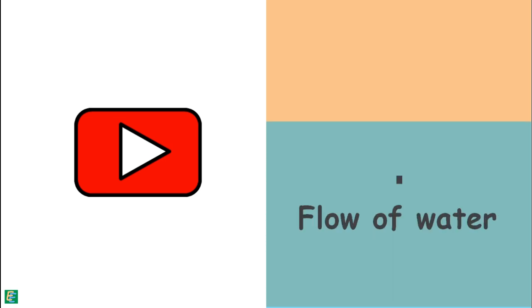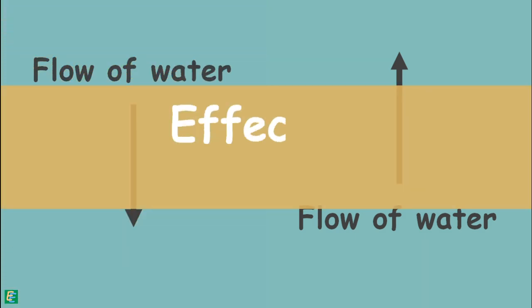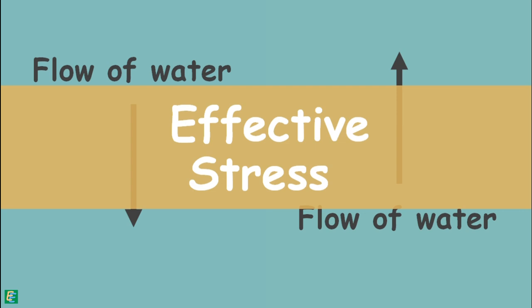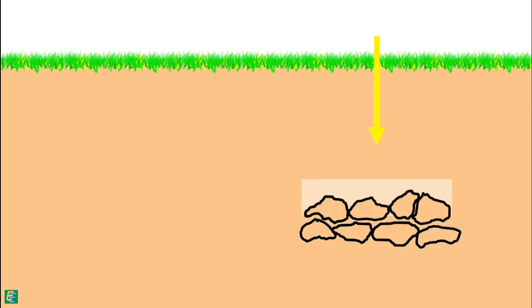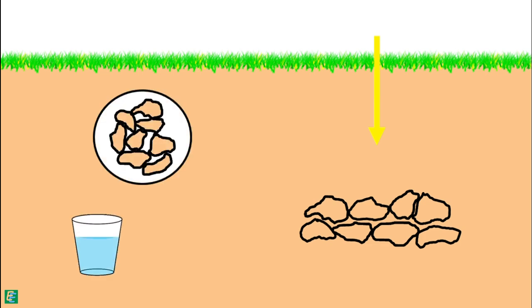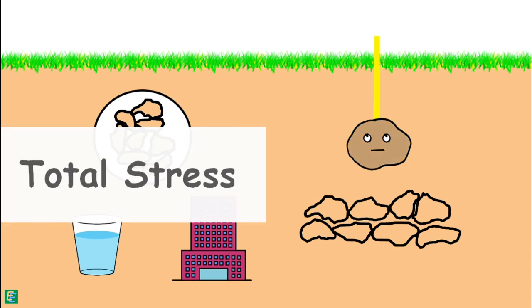In this video, we will discuss only the flow of water in the vertical direction. When water flows vertically, it has a direct impact on the effective stress acting on the soil particles. Soil particles in a soil mass are burdened by the weight of everything above them, which includes the weight of all soil particles above them, weight of water, and weight of any structure present above. Because of this weight, these particles experience stress, which we call total stress.